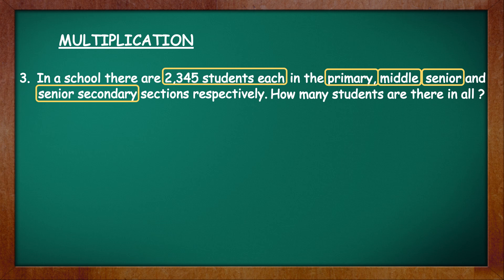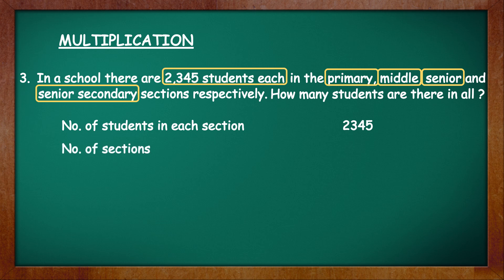Let's begin. First statement: number of students in each section is 2345. Next, we will write the number of sections, as that number has not been given in the question — only the different sections have been named. So we will write: number of sections, which is 4. Now we can find the answer. Write: therefore, number of students in all, and to get that we have to multiply 2345 into 4.